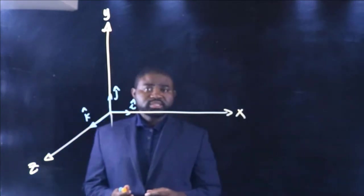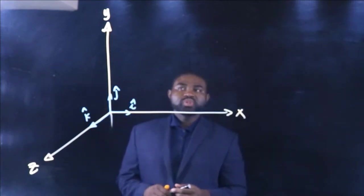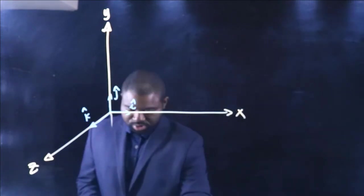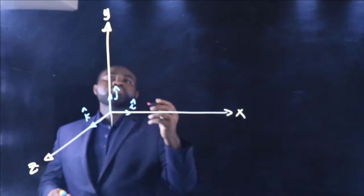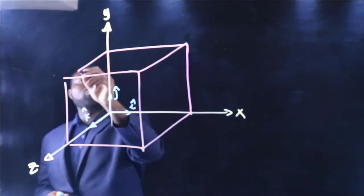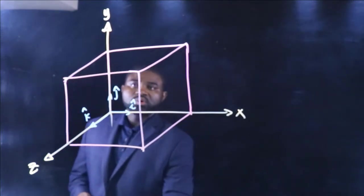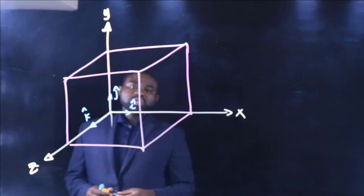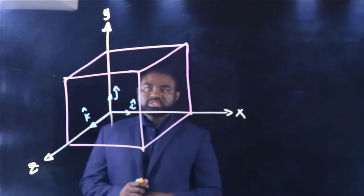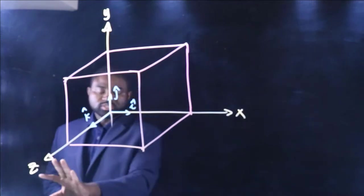Now, just to help you visualize this, I'm going to superimpose a box on this. Now, we have our coordinate system: the Y axis, the X axis, and the Z axis.